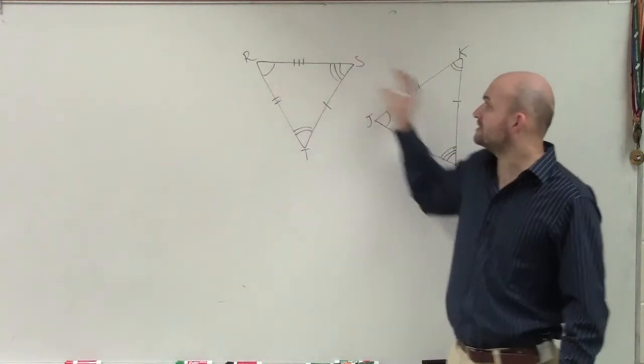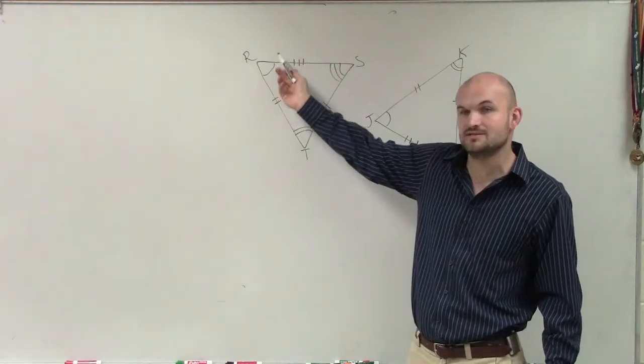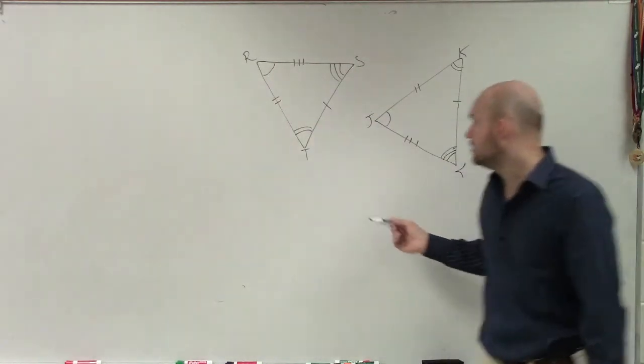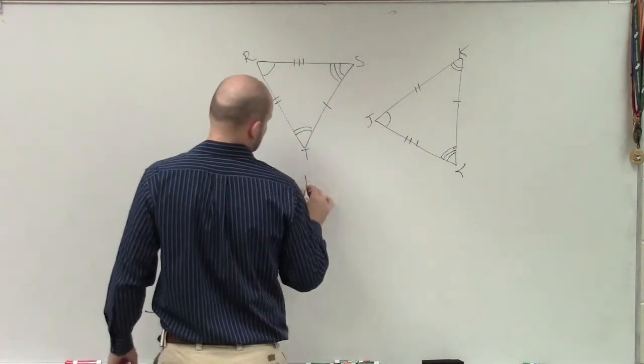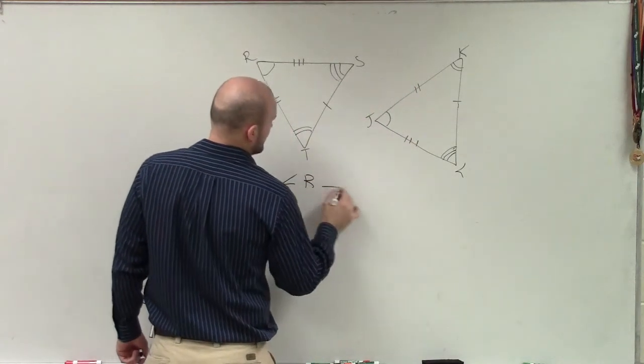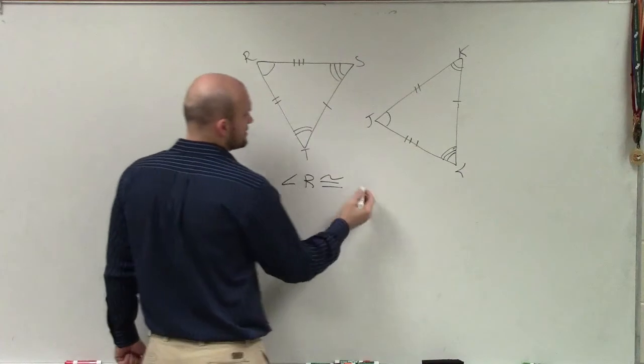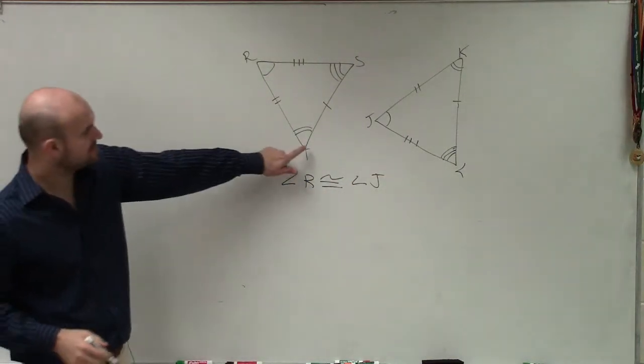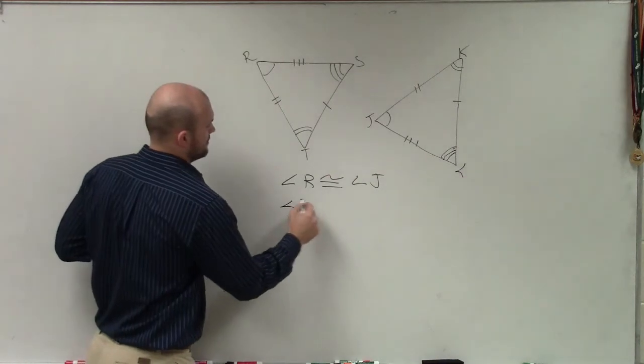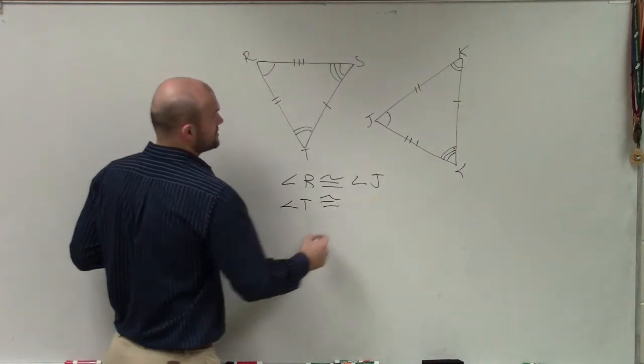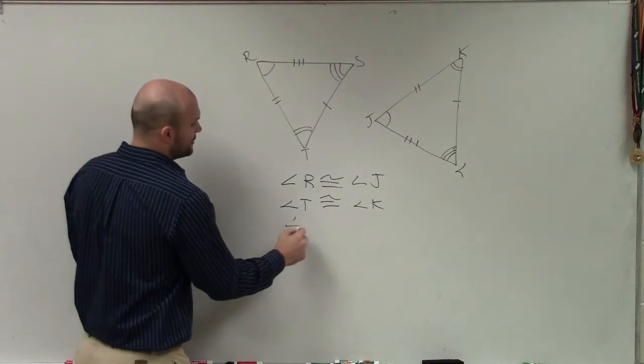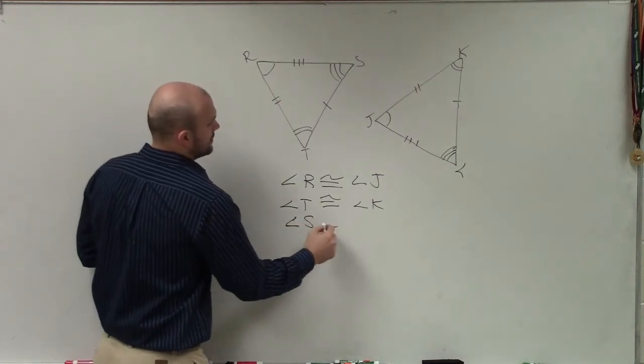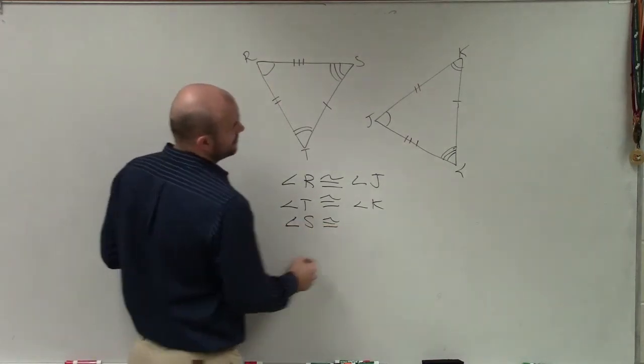So we look at this, and we can say that since this has one little arc and this has one arc, we can say that angle R is going to be congruent to angle J. Then we can see angle T is congruent to angle K, and angle S is congruent to angle L.